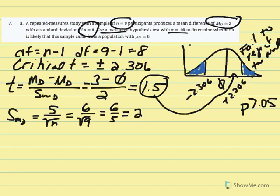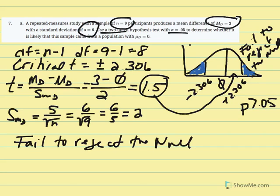Since we needed to determine whether it was likely that this sample came from a population with a mean difference equal to zero, we conclude it is very likely. Statistically, 1.5 is not far enough from zero to reject the null hypothesis. Our p value is greater than 0.05 and this sample most likely came from a population where the mean difference equals zero.